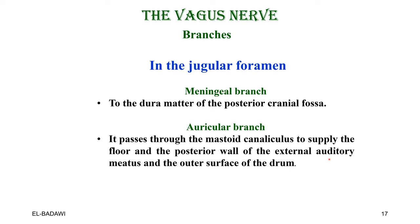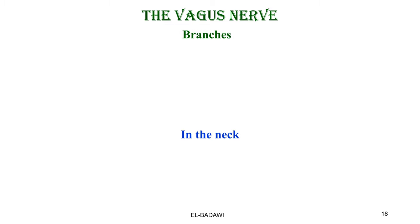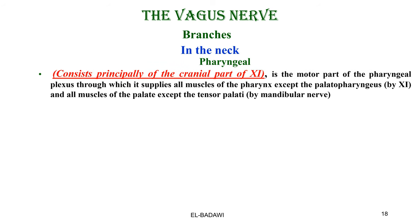The branches of the vagus in the neck include the pharyngeal branches, which consist principally of the cranial part of the accessory nerve. The pharyngeal and laryngeal branches of the vagus come from the cranial part of the accessory. They are motor to the pharyngeal plexus, through which they supply all muscles of the pharynx except the palatopharyngeus — supplied by the accessory — and all muscles of the palate except the tensor palatii, which is supplied by the mandibular nerve.